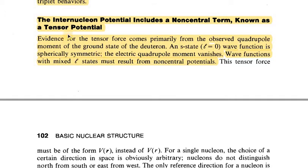Another property: The internuclear potential includes a non-central term known as tensor potential. Evidence for the tensor force comes primarily from the observed quadrupole moment of the ground state of the deuteron. An S state (l=0) wave function is spherically symmetric; the electric quadrupole moment vanishes. Wave functions with mixed L states must result from non-central potential.